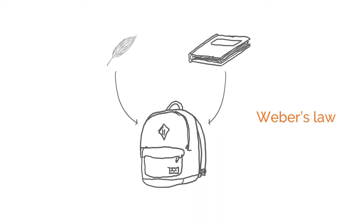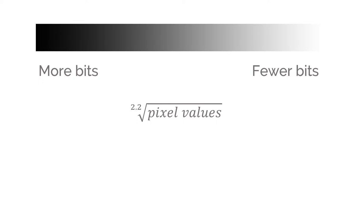Cameras take advantage of this phenomenon to optimize the usage of bits when encoding an image. More bits to encode the dark pixels and fewer bits to encode the bright ones. This is simply done by taking roughly the square root of the intensity values. This process is called gamma compression.